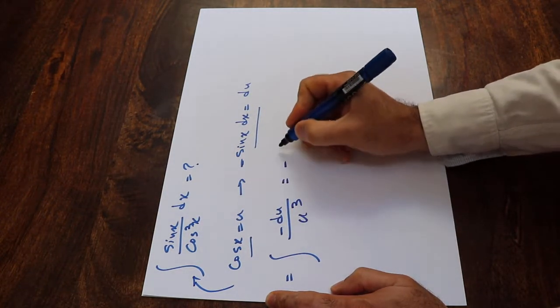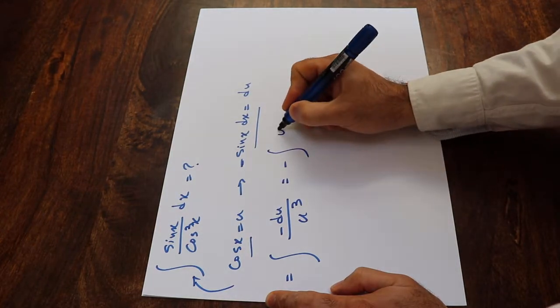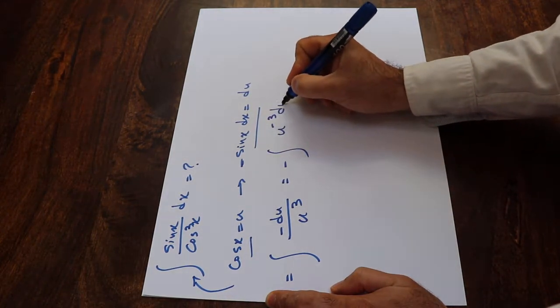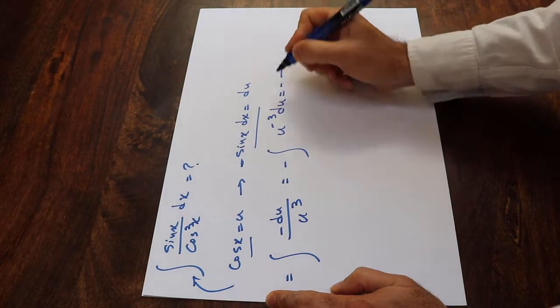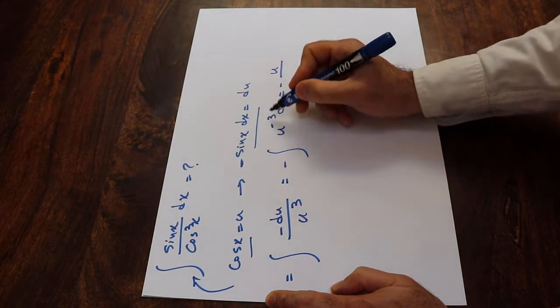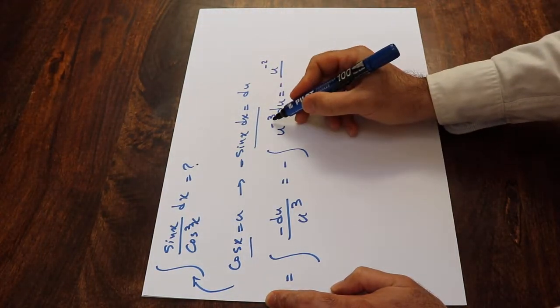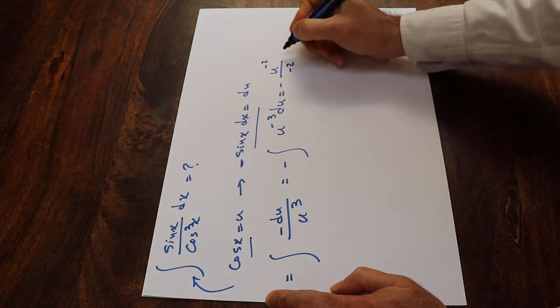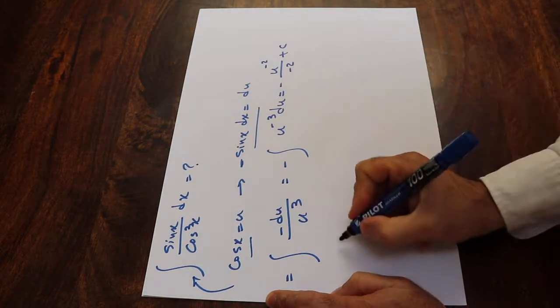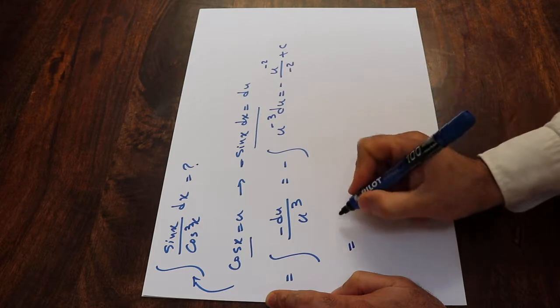This integral will be equal to minus integral of u to the power of minus 3 du, which will be equal to minus u to the power of minus 2—minus 3 plus 1 is minus 2—plus c, which is the constant of the integral, which equals 1 divided by 2.